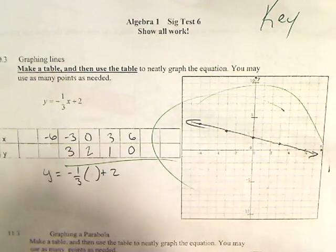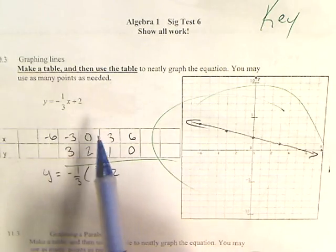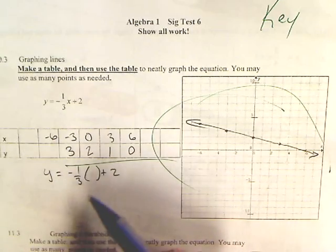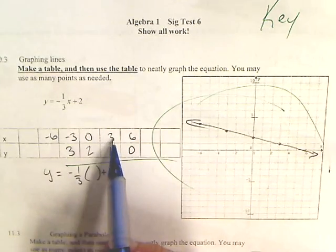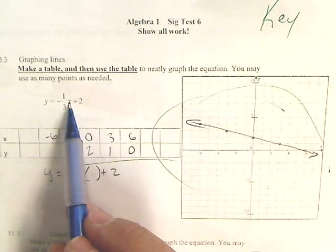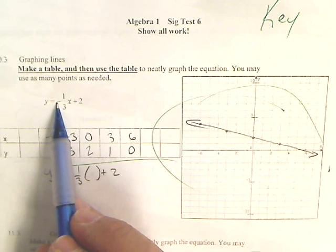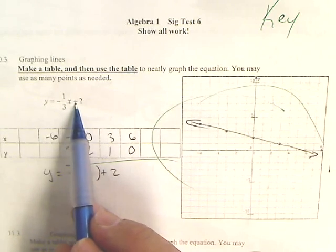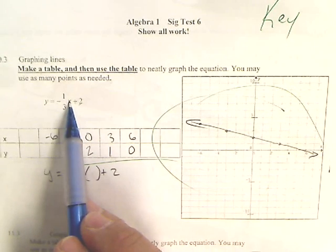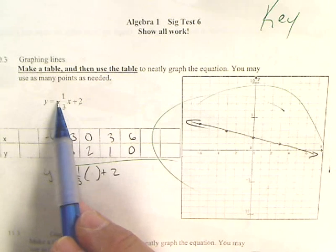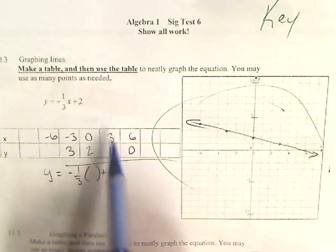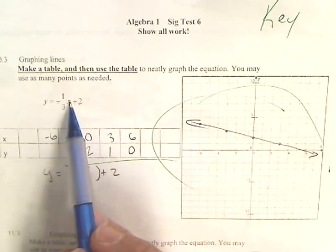Alright, 6.2, 6.3, graphing this line. I need to plug in values for x. Since I have to divide by three, I decided to plug in numbers that were multiples of three—makes it a lot easier for me. Plug in three: three divided by three is one, negative one plus two gives me one. Plug in six: six times one divided by three is two, negative two plus two is zero.